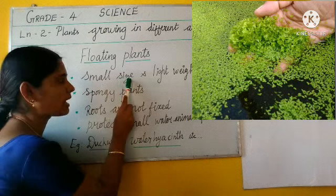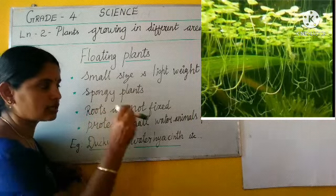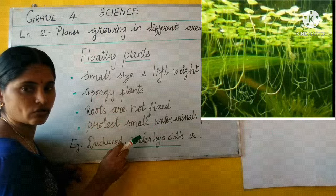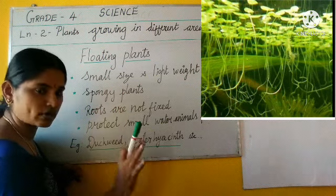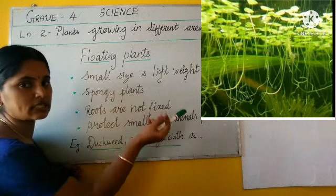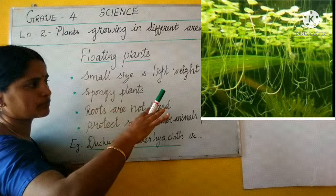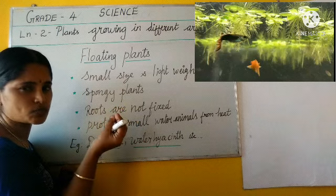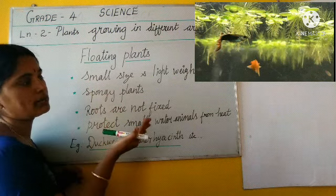Even though the plants are small in size, the roots are not fixed in soil — they are floating roots only. So the plants are very small, roots are not fixed, and the plant is spongy in nature. Because of this it is floating on water. It also protects small fish and small creatures living in the water.